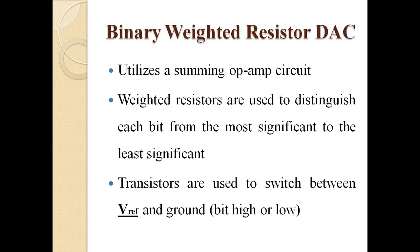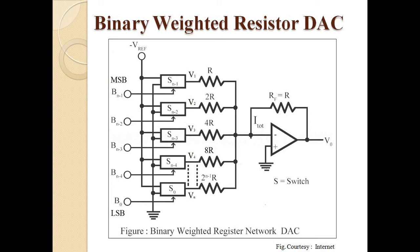The binary weighted resistor digital-to-analog converter utilizes a summing operational amplifier circuit. Binary weighted resistors are used to distinguish each bit from the MSB, that is most significant bit, to the LSB, that is least significant bit. Transistors are used as switches between reference voltage and ground depending on whether the bit is high or low. The reference voltage is given to each resistor and through the switch the same line is connected with ground.